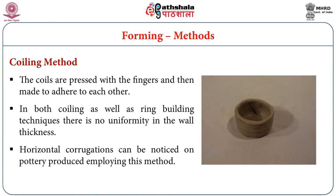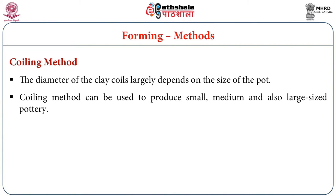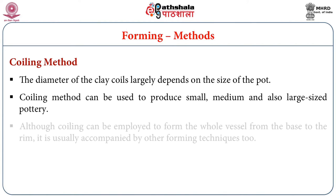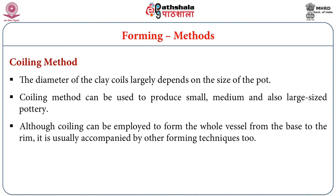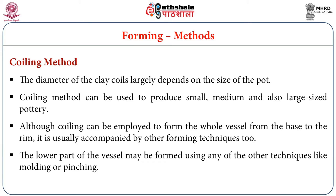Horizontal corrugations can be noticed on pottery produced by the coiling method. The diameter of the clay coils largely depends on the size of the pot — thicker coils for larger pots, thinner coils for smaller pots. Coiling can produce small, medium, and large-sized pottery. Although coiling can form the whole vessel from base to rim, it is usually accompanied by other forming techniques. The lower part of the vessel may be formed using molding or pinching.